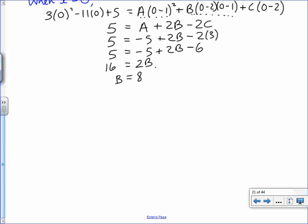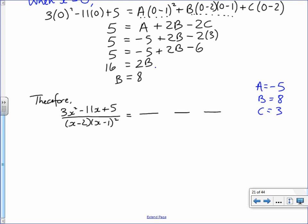So, we've got our three values. I'll write them down at the side. We find that A is equal to negative 5, we find that B is equal to 8, and we find that C has the value of 3. Therefore, our original expression, which was 3x squared minus 11x plus 5, all over x minus 2 times x minus 1 all squared, can be written as three fractions.